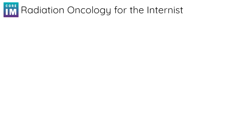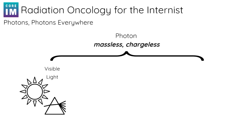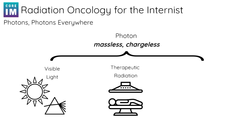The most common type of radiation therapy is photon radiation. So what is a photon, really? It's a massless, chargeless particle of energy — the same stuff visible light is made of. Photons can be used for radiation therapy, and we also use photons to make our x-ray images and CT scans.